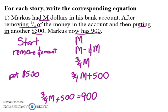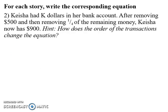Now let's look at how this changes with the next problem. Here I have Keisha. So we're going to start with Keisha having K dollars. And it says this time I'm removing $500 first. So that's K minus 500.